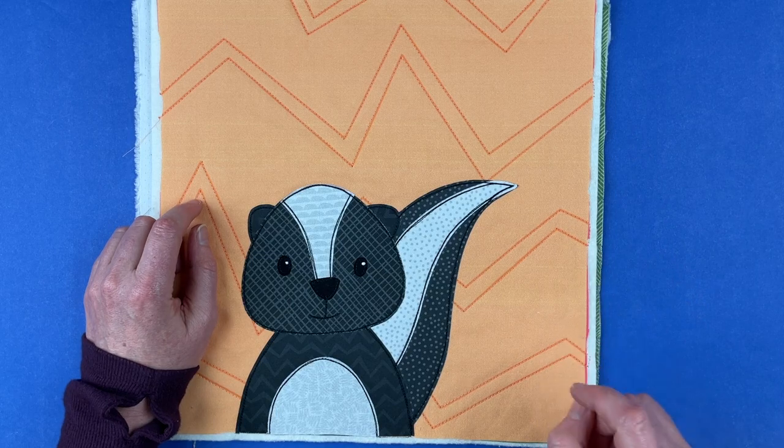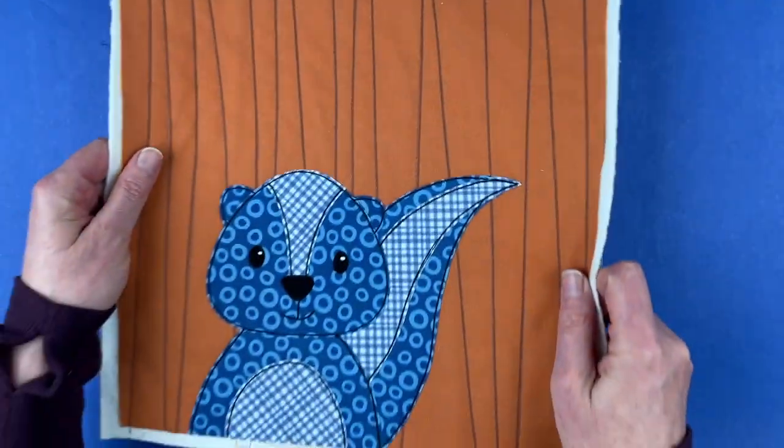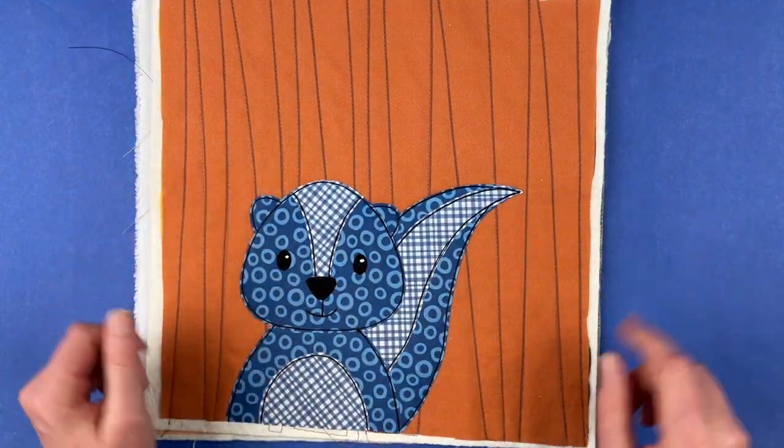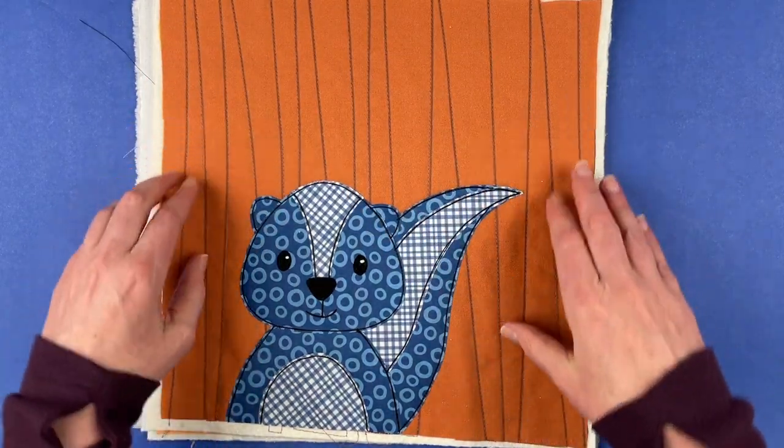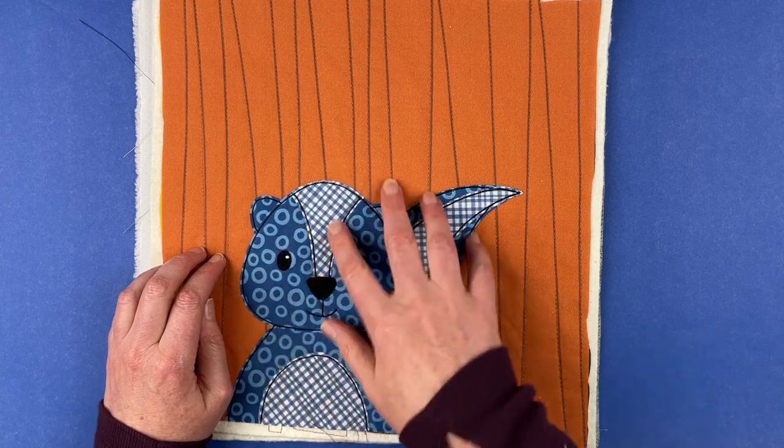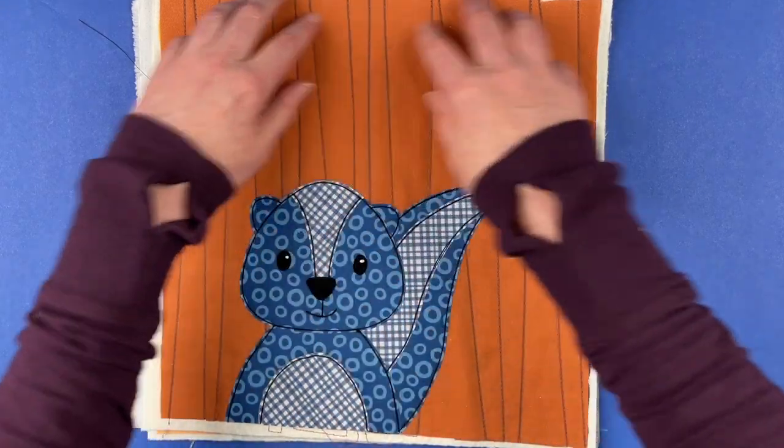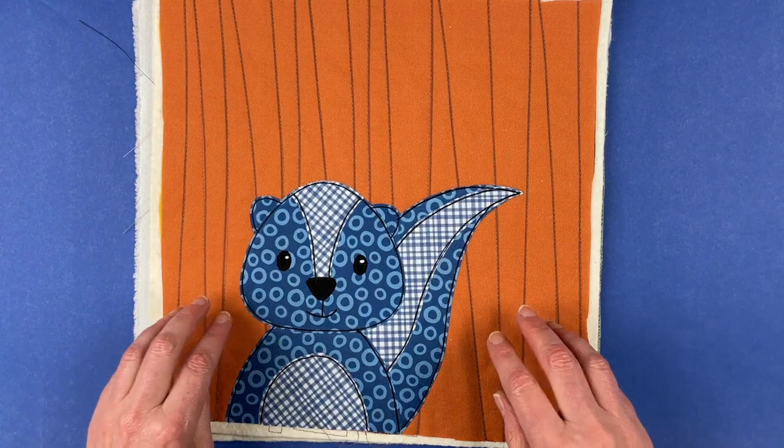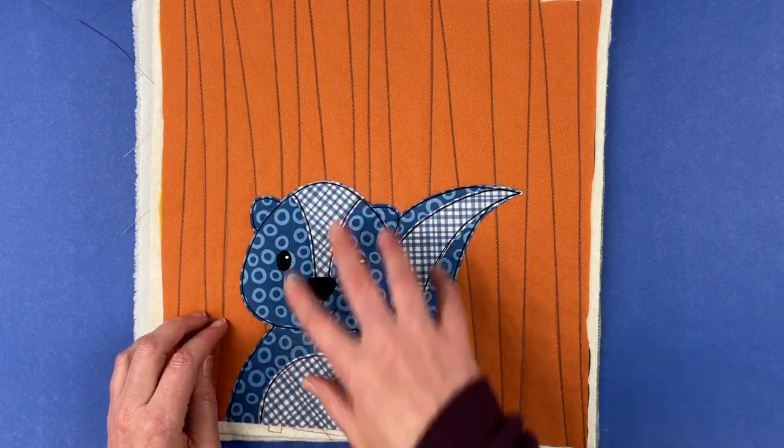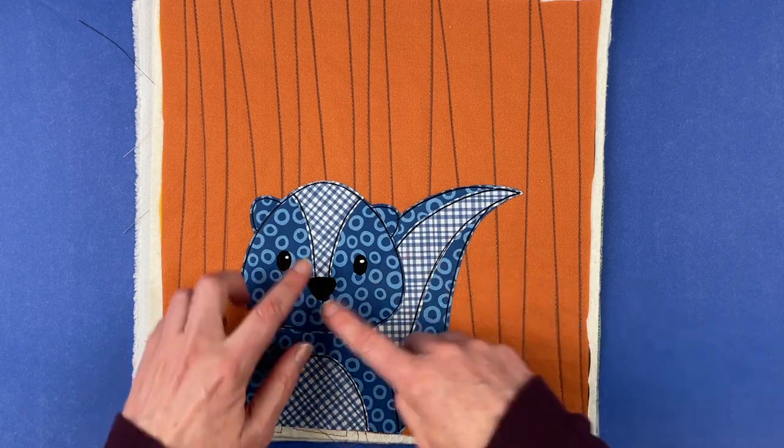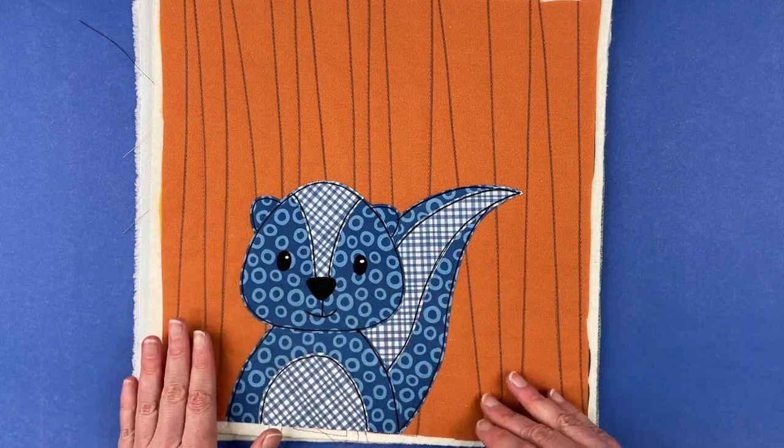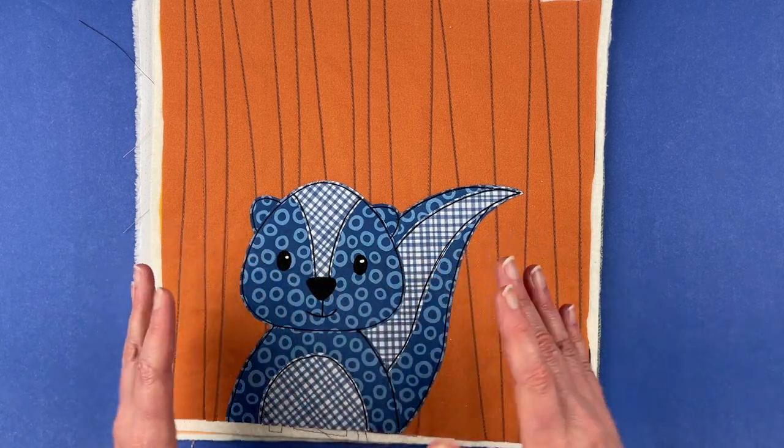And I did one more version, total fantasy version. So this is for a quilt that I'm working on where all of the background blocks are from the Animal Kingdom collection. So instead of the animals being realistic colors and the background being a bright color, the background is neutral animal colors. And the animals are all from the Farmer's Market Blenders collection. And each animal is monochromatic, so different shades of the same color.